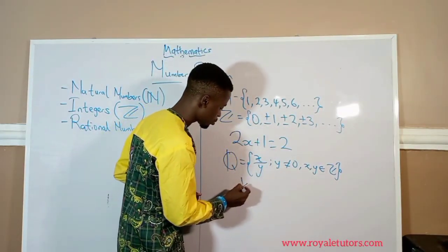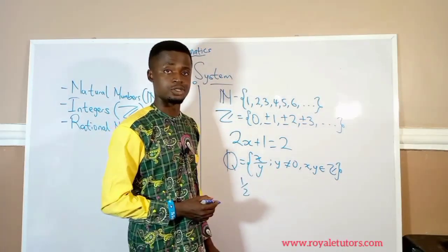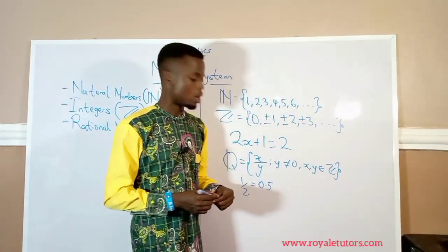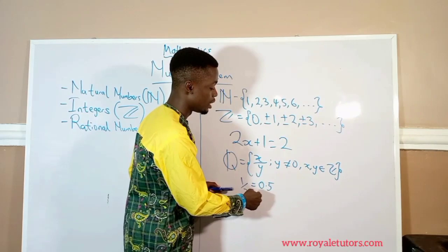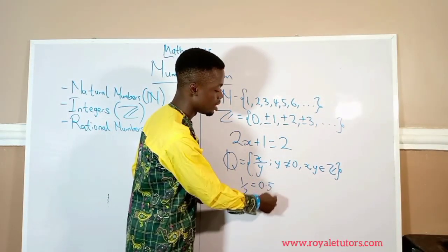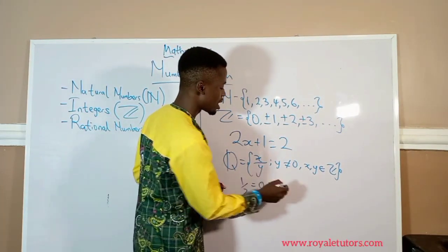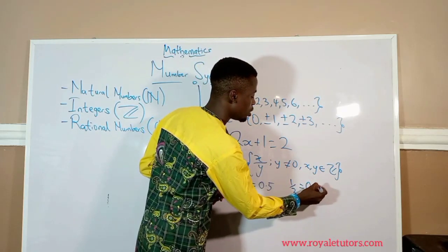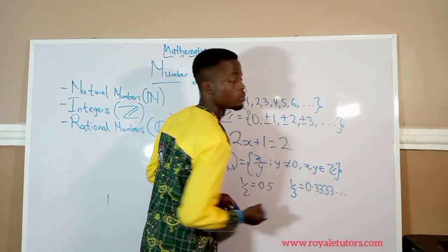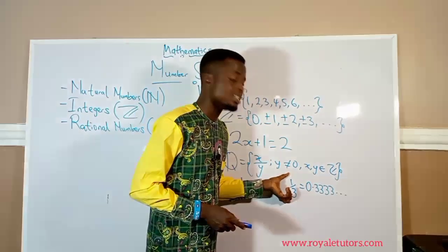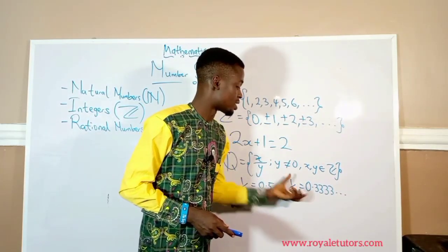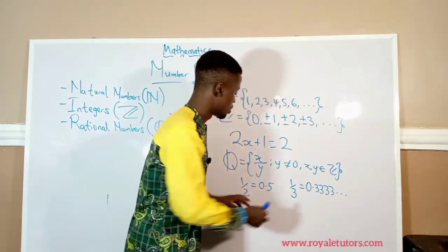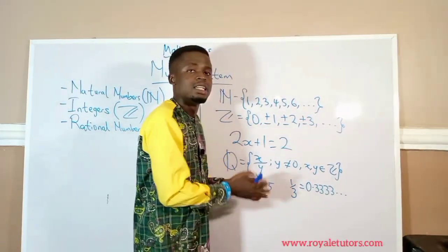For example, 1 over 2 is a fraction. When you convert 1 over 2 to a decimal, you get 0.5 — it terminates, meaning it stops and has an end. But when you consider 1 over 3, when you convert it to a decimal you get 0.3333... where the 3 continues — this is a reoccurring decimal. So both terminating and reoccurring decimals form rational numbers.